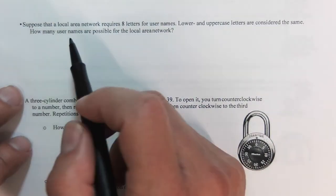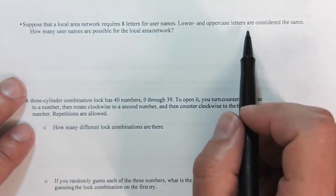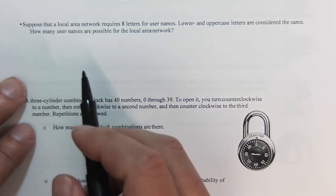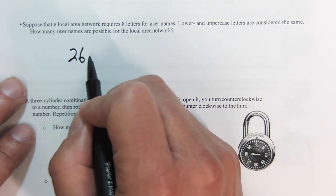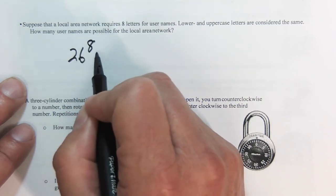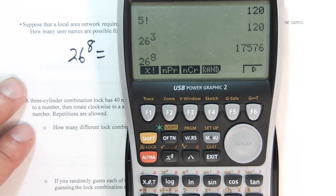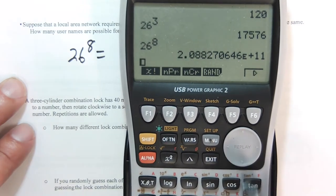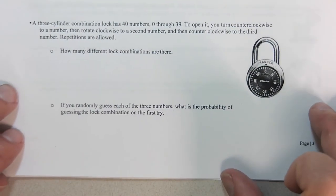A few more. The local area network requires eight letters for names. Lower and uppercase are considered the same. That's not in our world today, but we're going to pretend like it is for now. How many usernames are possible? Well, for each one, each letter, that's 26 times 26 times 26, eight times. That's going to be a massive number. I'm not going to write that out, but you can see I'm going to have to move that decimal point 11 spaces.